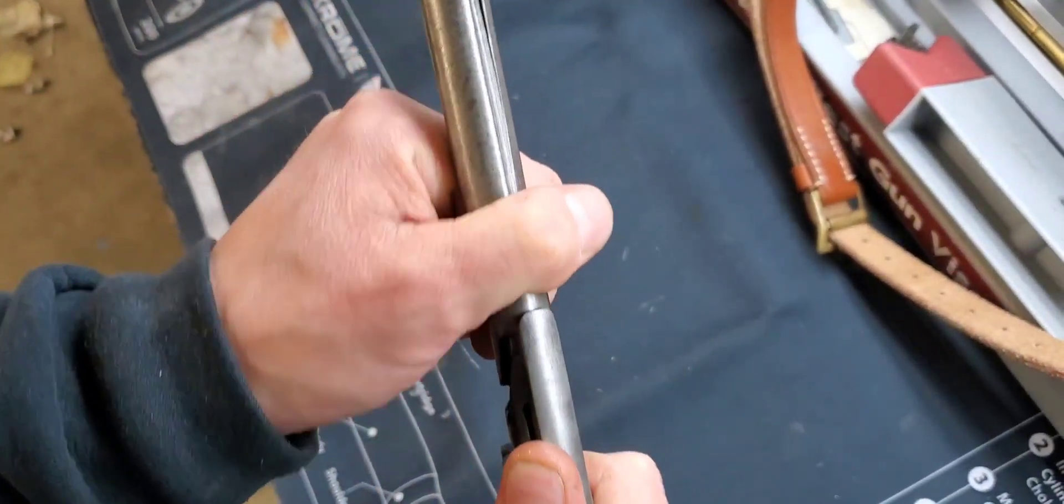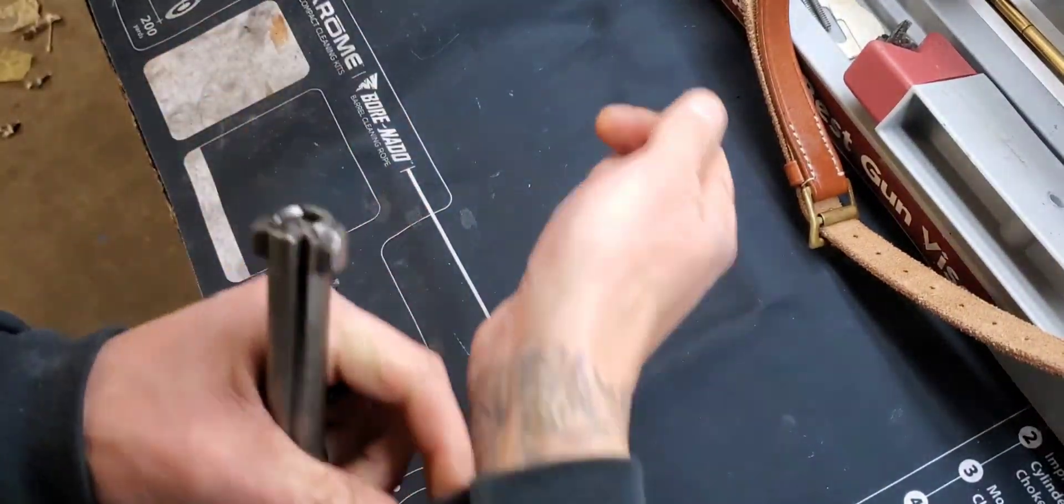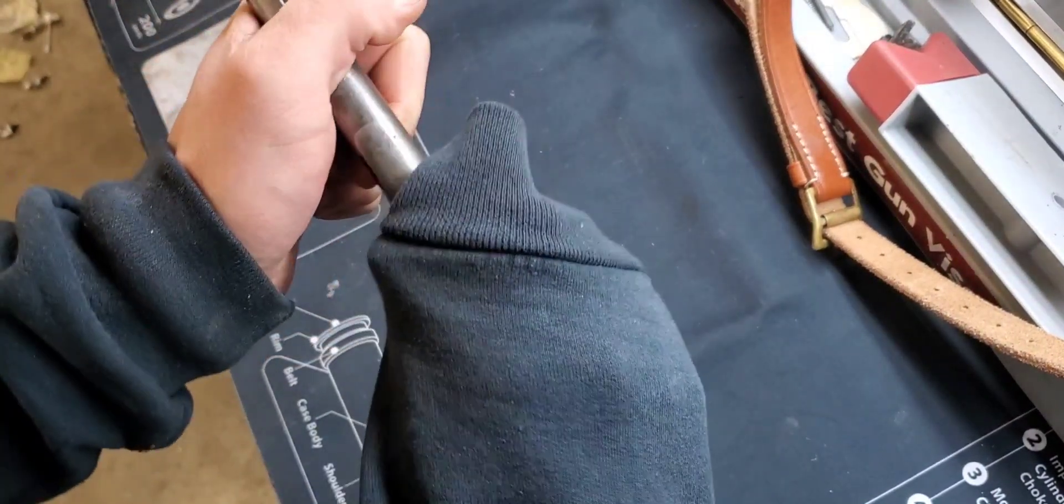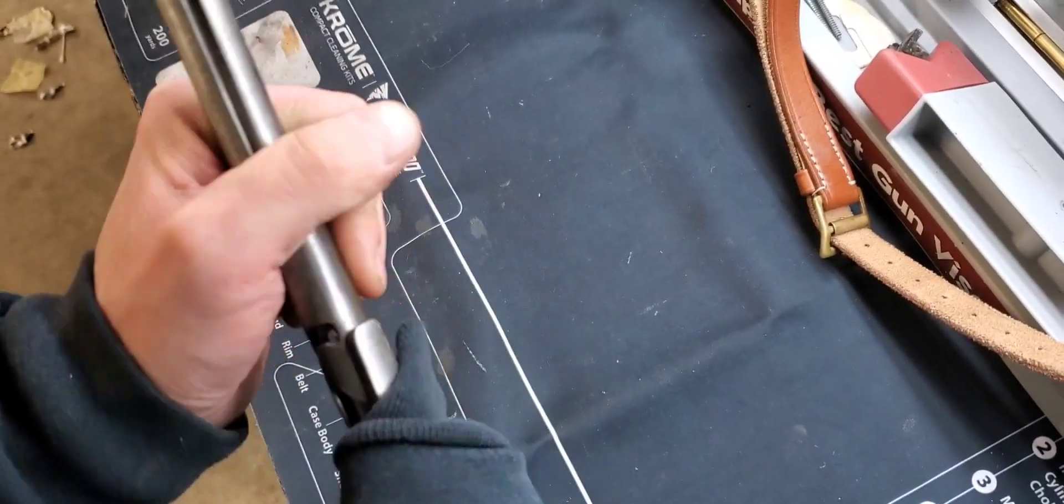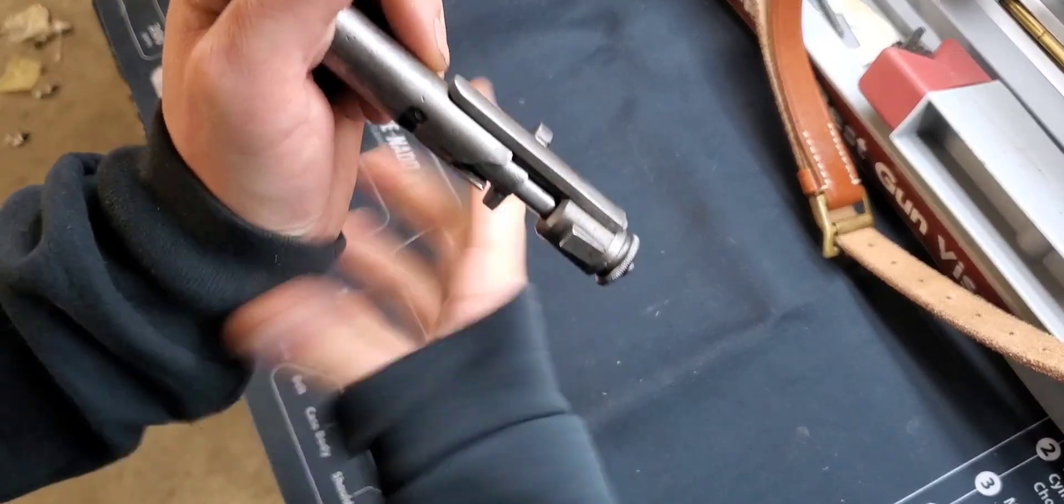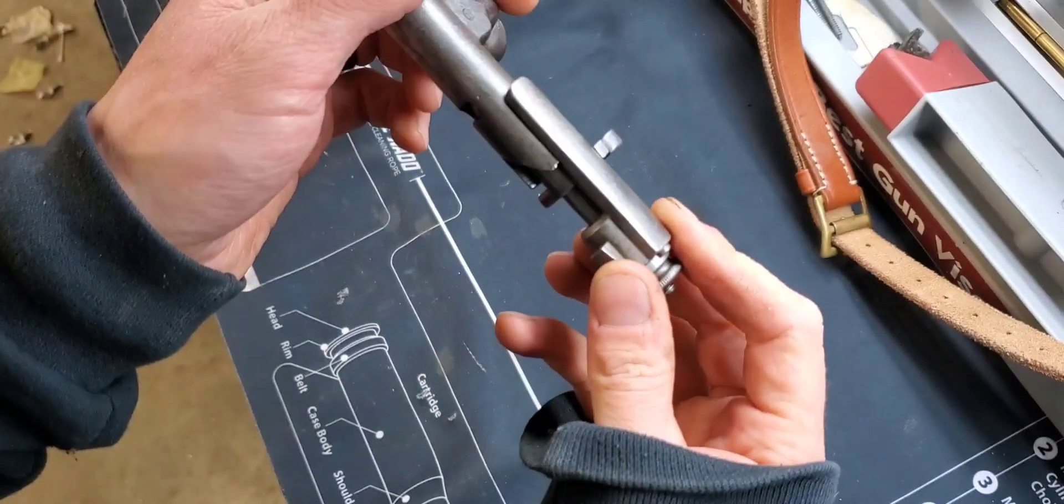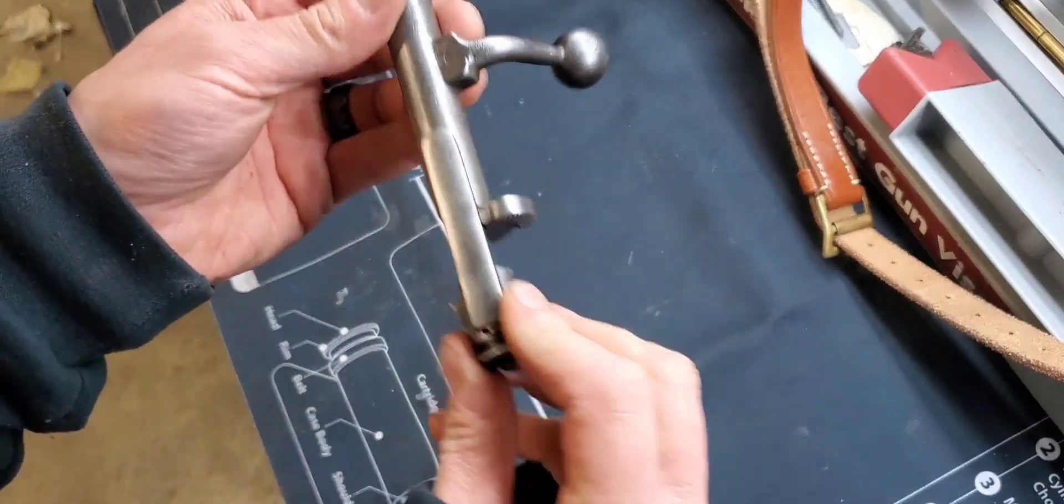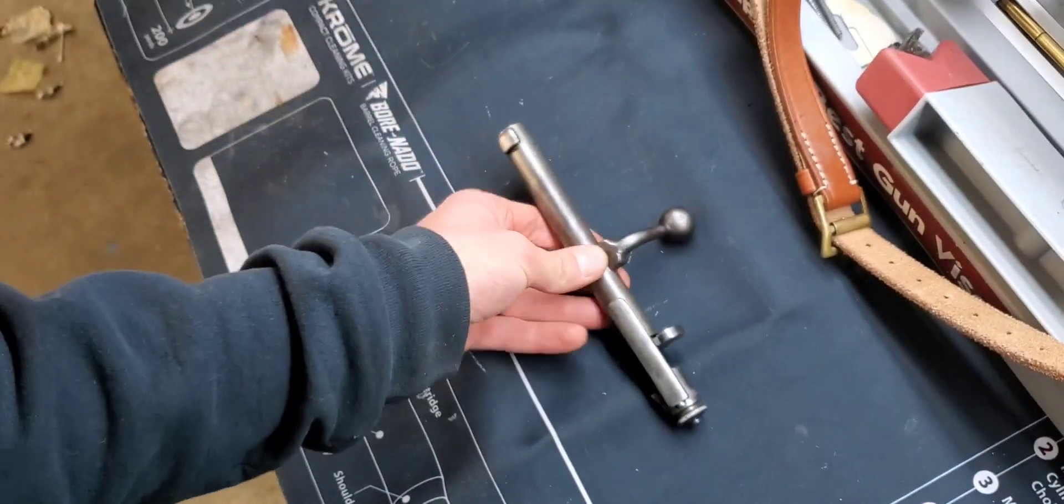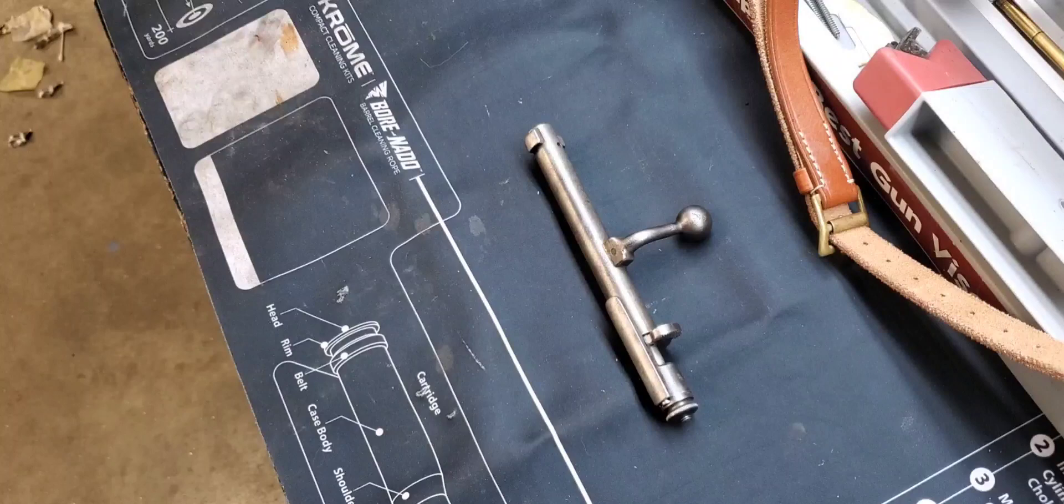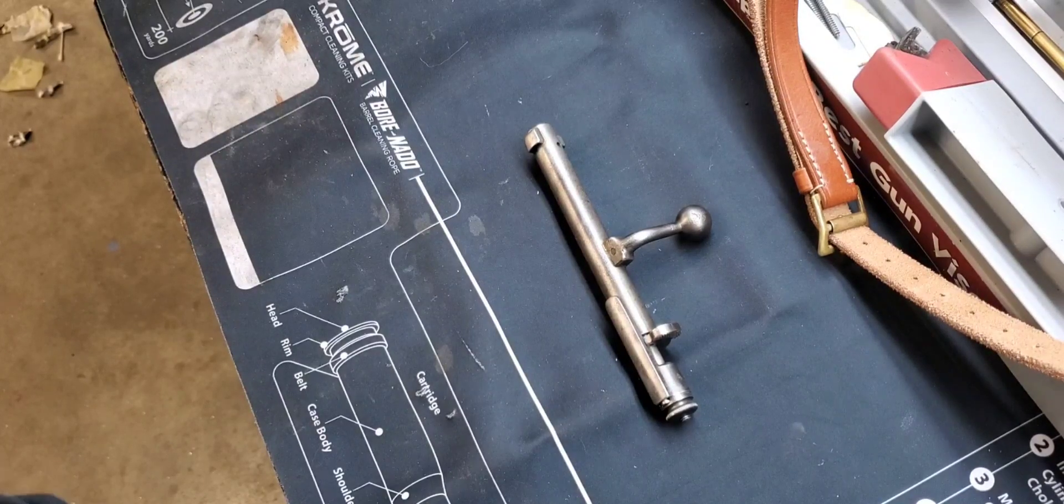Sorry about that. My hands are a little slippery. So we're just gonna pull back on that and turn clockwise there. So now that's cocked and that's ready to go back into the rifle. So that is disassembly and reassembly of a Carcano bolt.